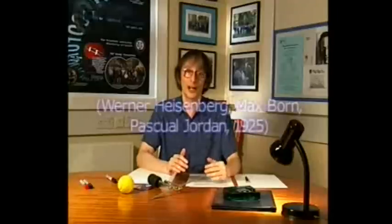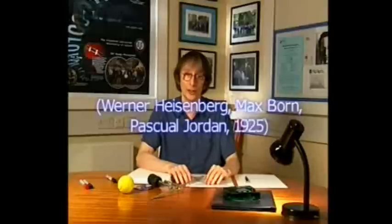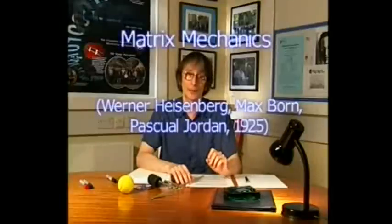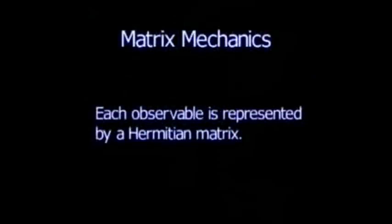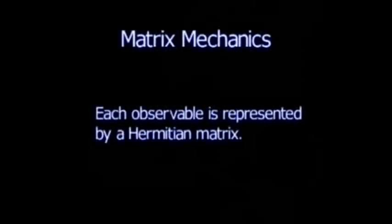Historically, the first formulation of what we would today call quantum theory was proposed by Werner Heisenberg with the help of Max Born and Pasquale Jordan in 1925. It was called matrix mechanics, because in it each observable is represented by a Hermitian matrix. Check the accompanying notes if you want a summary of the basic properties of Hermitian matrices.